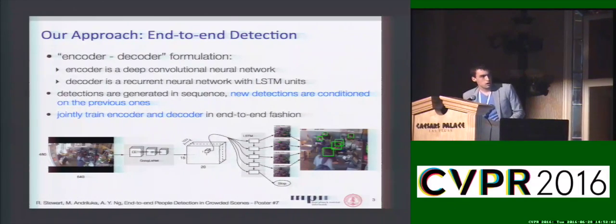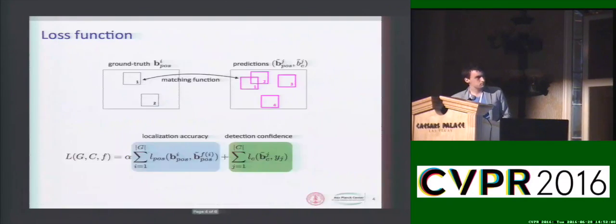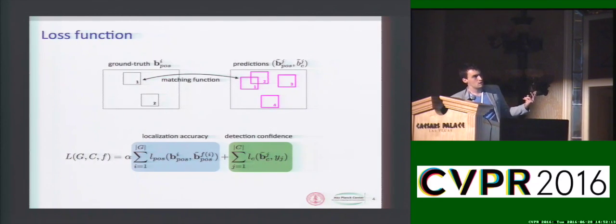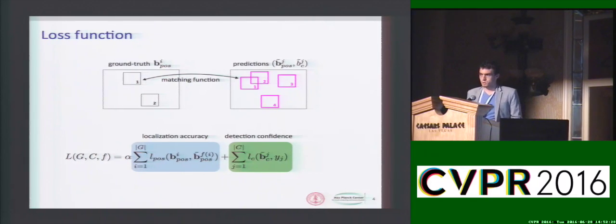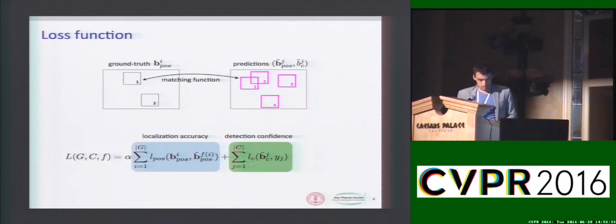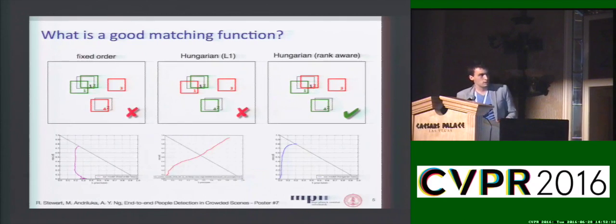The critical question is how do we train it — what's the loss function? We have a loss function that needs to operate over sets. For example, we have two correct boxes and four predictions, and the critical question is which two are correct and which two are incorrect. A matching function tells us which ones are good. Once we know the correct two, we can increase their confidence, decrease the confidence of the others, and fine-tune the regression. Defining a good matching function is the critical part to make it work well.